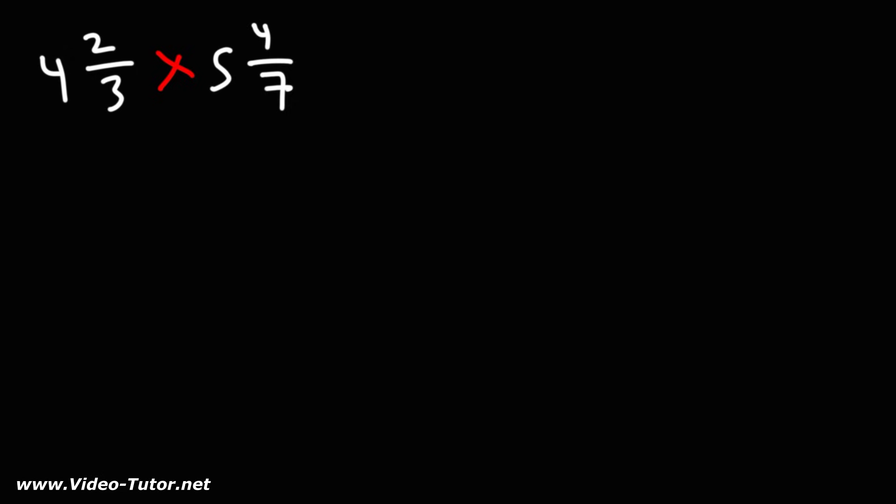So let's do what we did before. Let's convert each mixed number to an improper fraction. So let's begin by rewriting the denominator. 4 times 3 is 12 plus 2, that's 14. For the second one, the denominator is 7. 5 times 7 is 35 plus 4, that's 39.